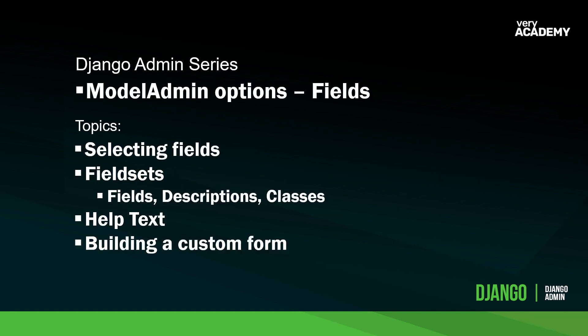In this tutorial we're going to start looking at customizations, specifically the model admin options — the fields. We're going to learn how to select fields to display in the form, then customize that further by looking at fieldsets, so grouping fields together. We'll look at different options like descriptions, how to bring in classes, different help text options in the form, and finally give you a baseline to start building a custom form.